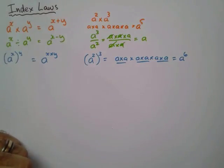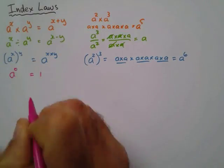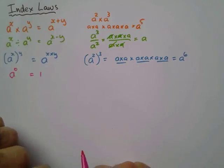Fourth one is a property, it's not so much a rule, but we know that anything to the power 0 equals 1.